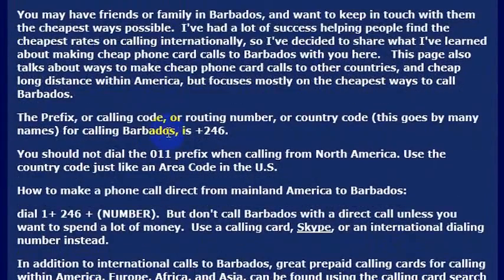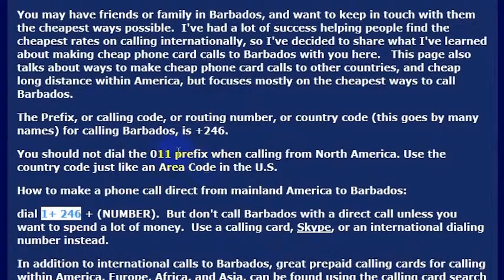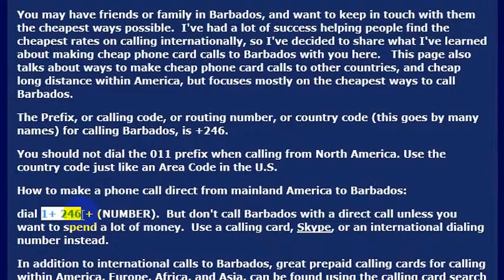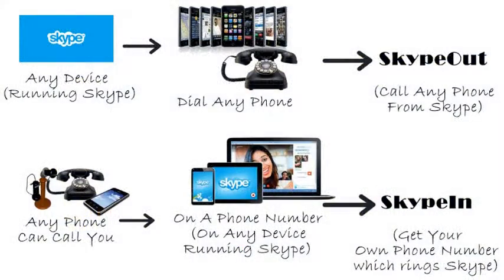It's very simple. What you would do from mainland America phones, if you were calling from the U.S., is simply dial 1 plus 246. 246 is treated as the area code for Barbados. So you do not need the 011 prefix. You can simply dial 1 and then 246, and then the phone number you are trying to reach to reach someone in Barbados.